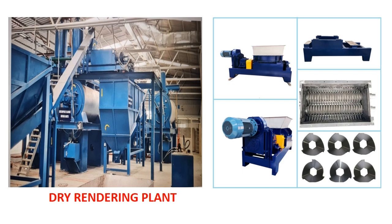Here we can see a dry rendering plant in a large industrial setup. On the left side there is a cylindrical structure, which is the main part for rendering — the dry renderer or dry rendering cooker, which works like an autoclave with different stages by steam, but cooking happens indirectly. On the right side there are other units like a pre-breaker unit, a grinding unit, and a fat separation unit.